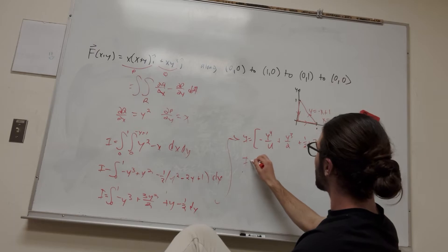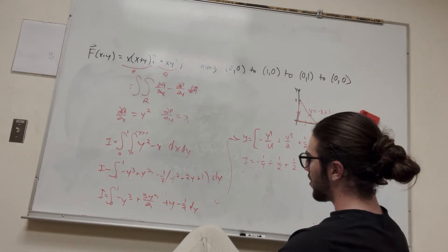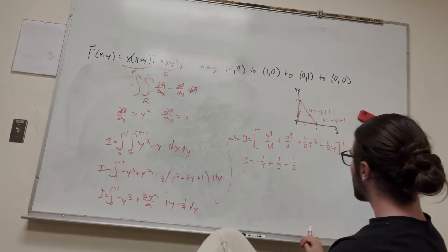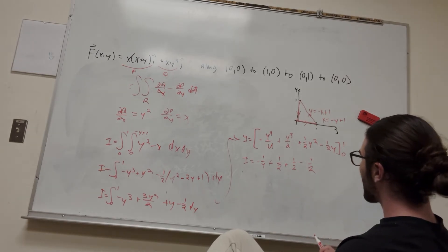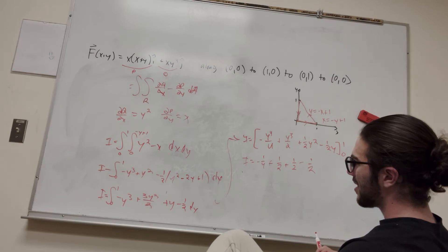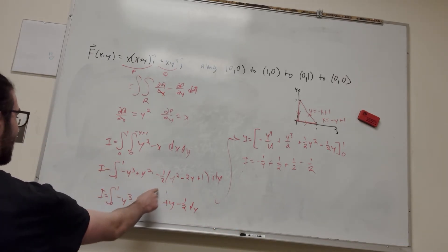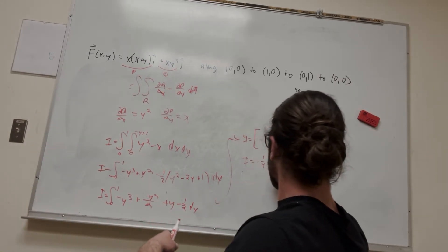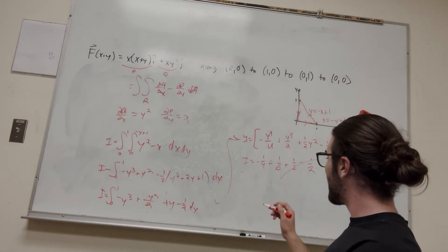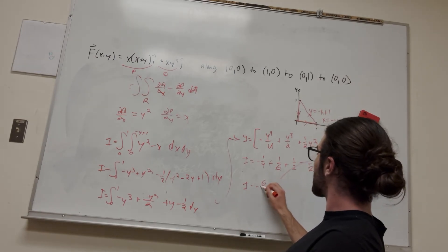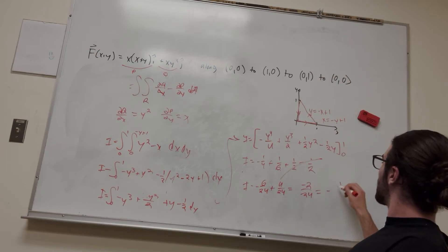This is going to be negative 1 fourth plus 1 half plus 1 half minus 1 half. I missed a negative somewhere. Hold up. Good thing for pattern recognition, am I right? I've solved this problem a lot now, so I know I did something wrong. These are going to cancel out. So then it's going to be negative 6 over 24 plus 4 over 24, which is equal to negative 2 over 24, or negative 1 over 12. That's your final answer.